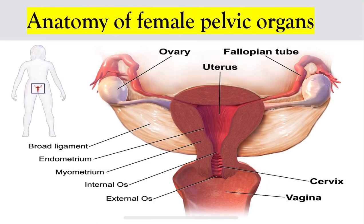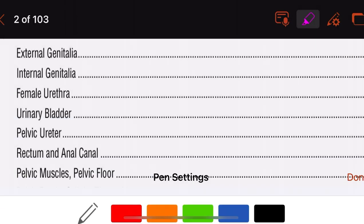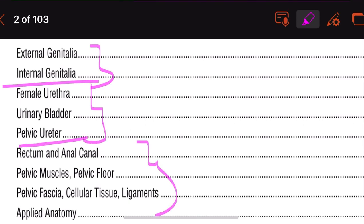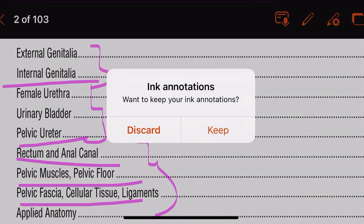Welcome back. In today's video, we are going to discuss the anatomy of female pelvic organs. We'll be dealing with external genitalia and internal genitalia. In the next session: urethra, urinary bladder and pelvic ureter. In the third session: rectum, anal canal, pelvic muscles and pelvic floors, fascia, cellular tissues, ligaments and applied anatomy.